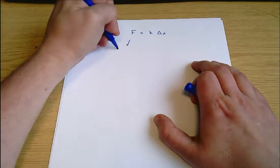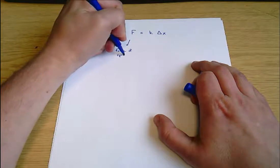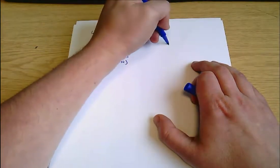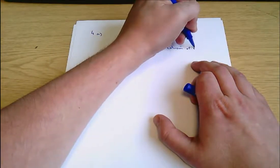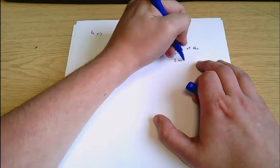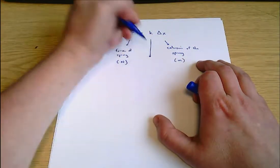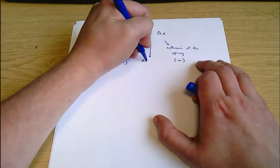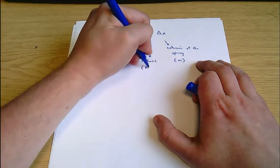This is the force of the spring and it's in newtons. This is the extension of the spring and that's a distance so we'll write it as having units of meters. And because the units have to match on both sides of the equation, k is known as the stiffness of the spring and we know that it has to have units of newtons per meter.